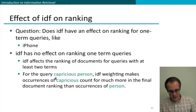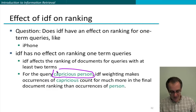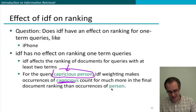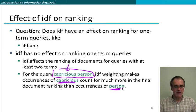You only get an effect from IDF when you have multiple terms in a query. So for example, if we have the query capricious person, well now we're in a situation where capricious is a much rarer word. And so IDF will say, pay much more attention to documents that contain the word capricious than to documents that contain just the word person in ranking your retrieval results.